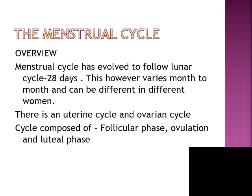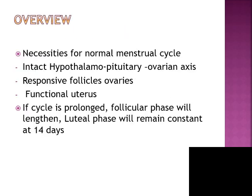When we say menstrual cycle, we can have a uterine cycle and an ovarian cycle. The ovarian cycle is broadly classified into follicular phase, ovulation phase, and luteal phase. For the menstrual cycle to start, there has to be an intact hypothalamo-pituitary-ovarian axis.